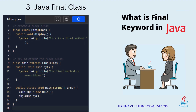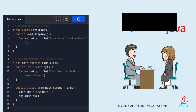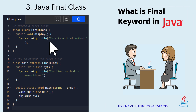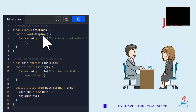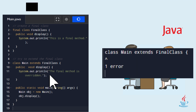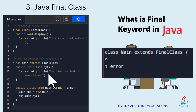3. Java final class. In Java, the final class cannot be inherited by another class. For example, we have created a final class named FinalClass. Here, we have tried to inherit the final class by the main class. When we run the program, we will get a compilation error.